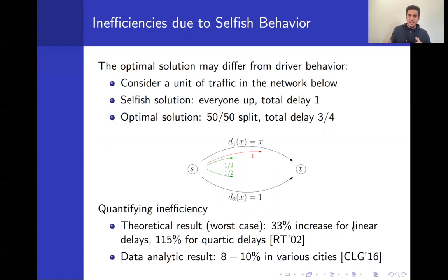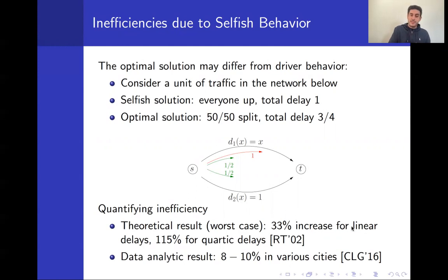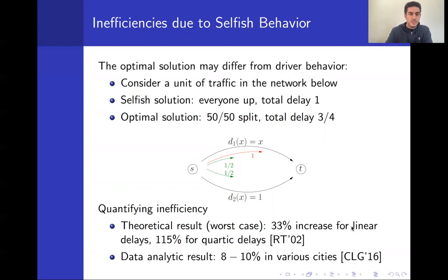Understanding this inefficiency induced by selfish behavior has been studied extensively. Theoretical results show that in the worst case, there can be a 33% increase in total travel time with linear delay functions, and up to 115% with quartic delay functions. However, these are pessimistic worst-case guarantees. Data studies have shown that actual inefficiency in real cities is somewhere between 8 and 10%, which we also verify in this work.